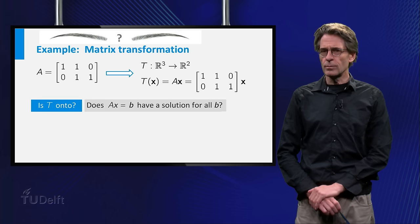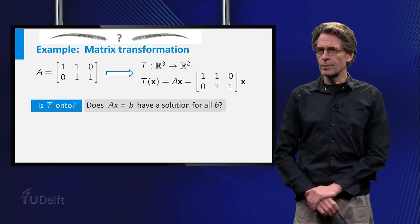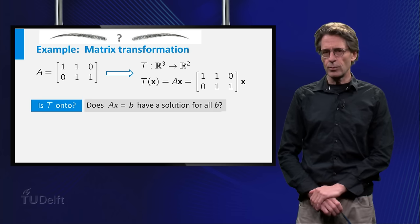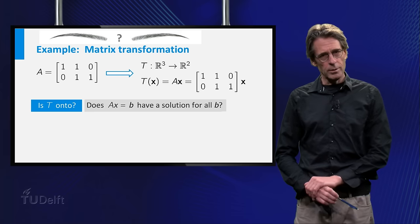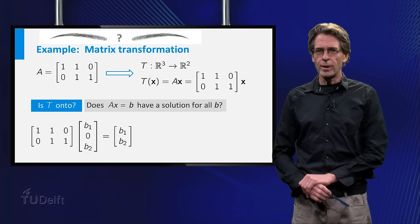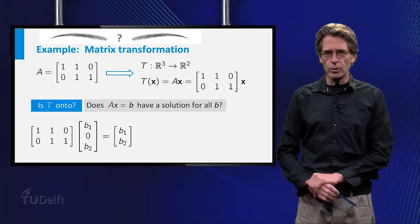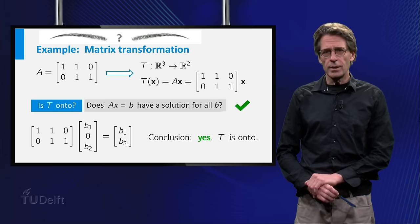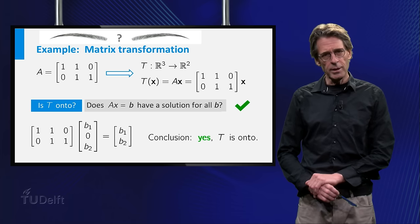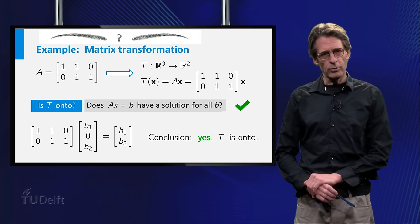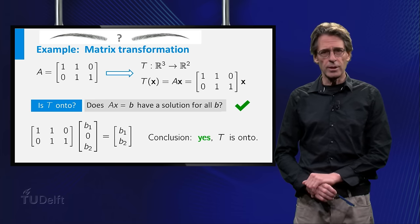Is t an onto function? Well, if you multiply the matrix with the vector b1, 0, b2, you get the arbitrary vector b1, b2. So yes, the equation t of x equals b has a solution for every vector b. This shows that t is onto.